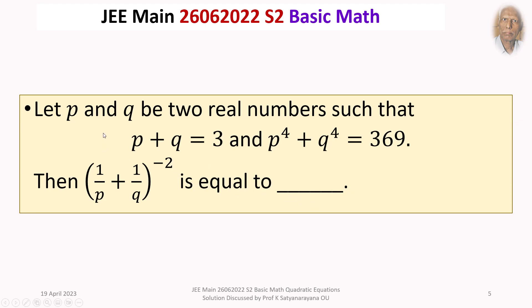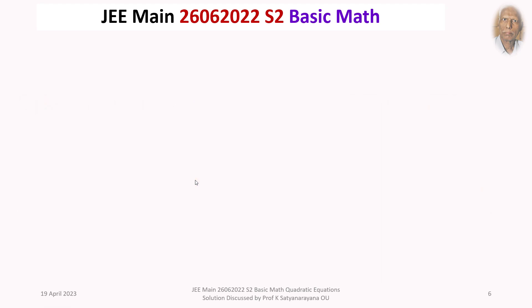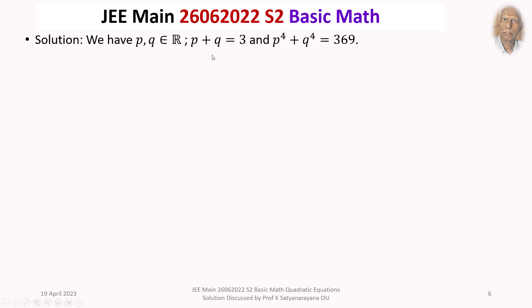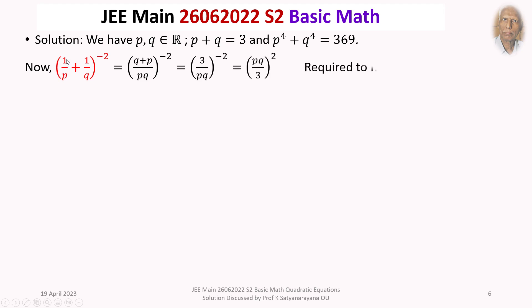We are given two real numbers P and Q satisfying P plus Q equal to 3 and P⁴ plus Q⁴ equal to 369. We are required to find the value of (1/P + 1/Q) to the power of minus 2.